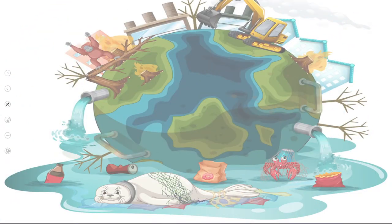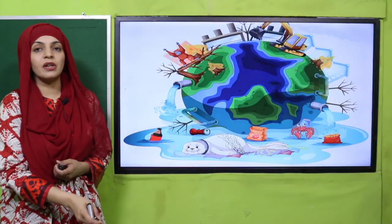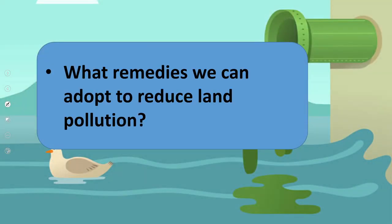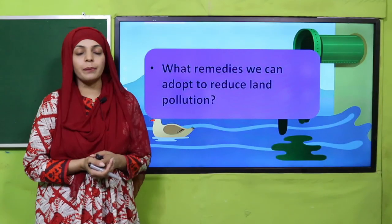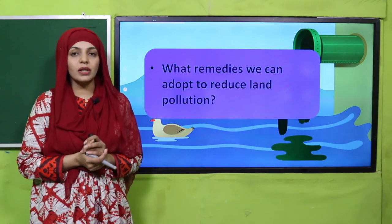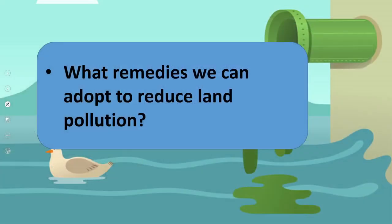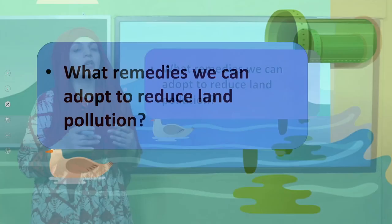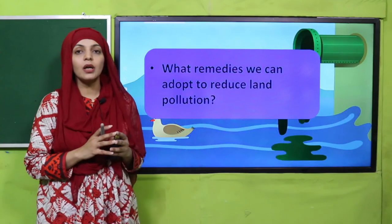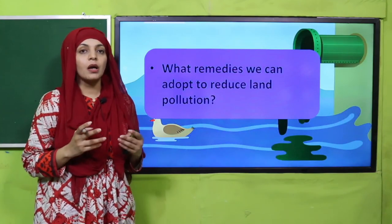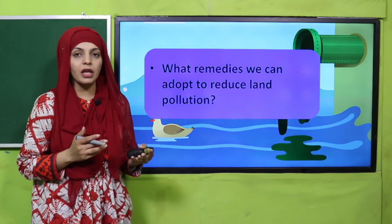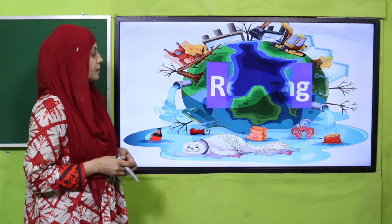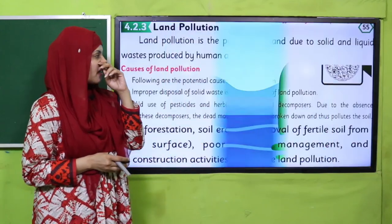Now let's move forward to the pre-reading question. Quickly tell me: what are remedies we can adopt to reduce land pollution? Kis tariqa se hum land pollution ko control kar sakte hain? By planting more and more trees. Iske alawa, kura jo hai usko properly dump karein, usko open spaces mein mat phaenke. Khali plot dekh kar kura nahi phainkein. Is tariqa se hum land pollution ko control kar sakte hain.